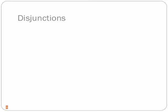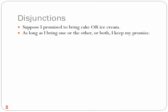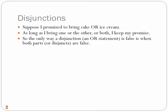Now, what about OR statements — disjunctions? Suppose I promise cake or ice cream. That's a weaker promise: I'll bring at least one, possibly both. The only way I would lie is if I bring neither. So a disjunction is false only when both disjuncts are false. The parts of conjunctions are called conjuncts; the parts of disjunctions are called disjuncts.